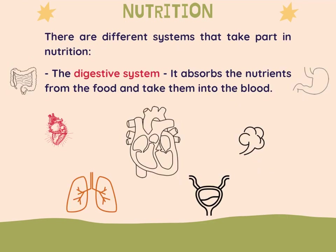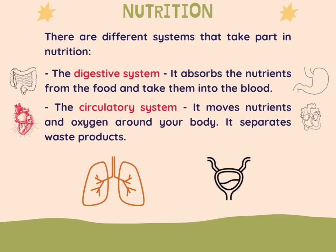There are different systems that take part in nutrition. One of them is the digestive system. The digestive system absorbs the nutrients from the food and takes them into the blood. Another one is the circulatory system. It moves nutrients and oxygen around your body and separates waste products.